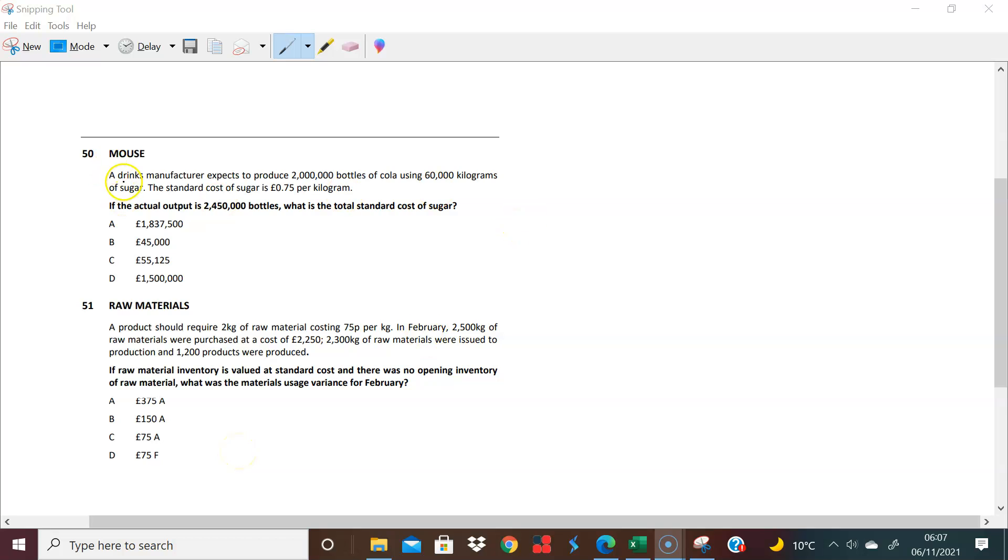Alright, let's look at this problem. A drinks manufacturer expects to produce 2 million bottles of cola using 60,000 kilograms of sugarcane. This is to help us understand the expectation of what we need, what we expect to use to make one bottle of cola.